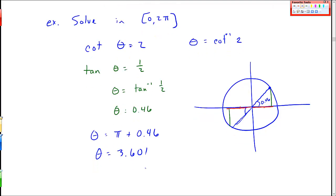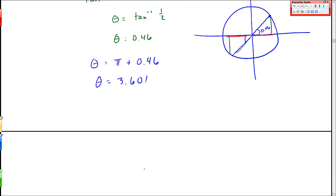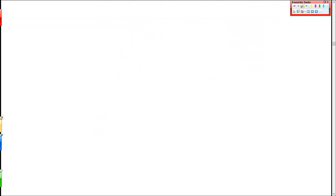Okay, I want to do one more so that you can kind of see where domain and range comes into play here. Let's just change that previous problem a little bit and find where cotangent theta equals negative 2.